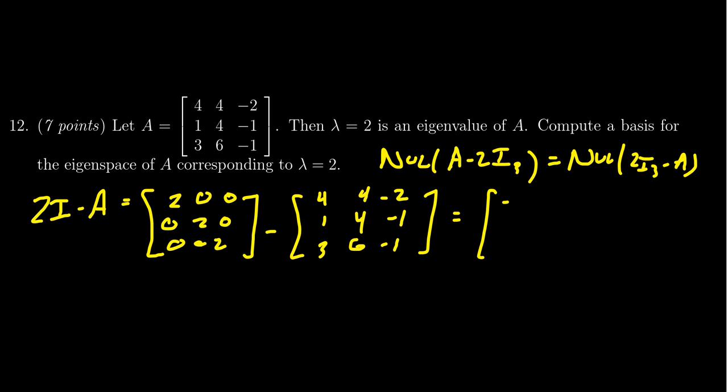You're going to get 2 minus 4, which is negative 2. You're going to get 0 minus 4, which is negative 4. You're going to get 0 plus 2 for the first row. For the second row, you get 0 minus 1, 2 minus 4, and 0 plus 1. For the last row, you're going to get 0 minus 3, 0 minus 6, and 2 plus 1, which is 3.